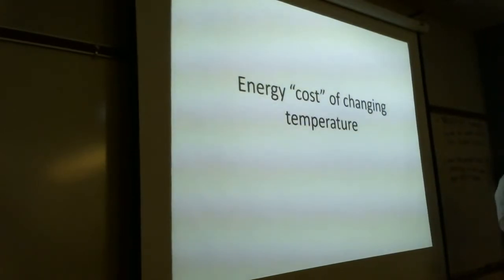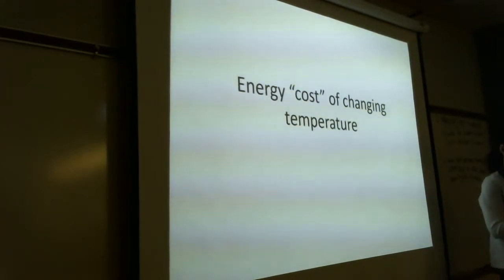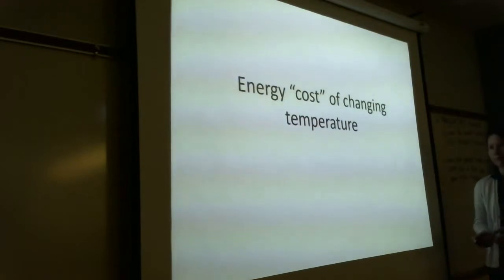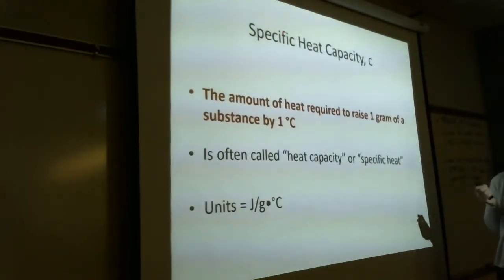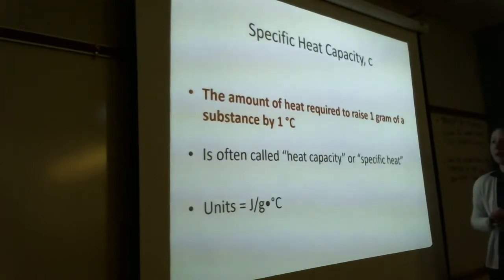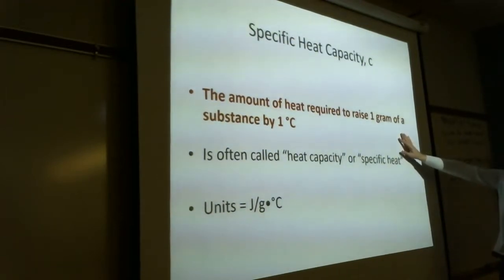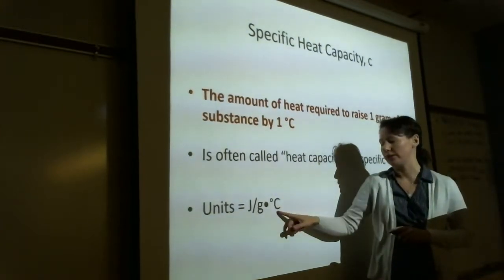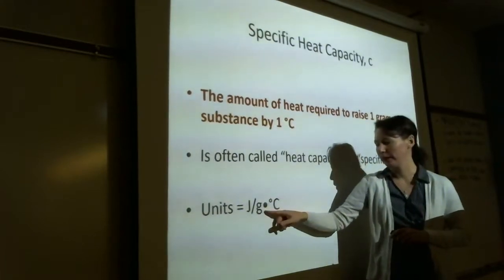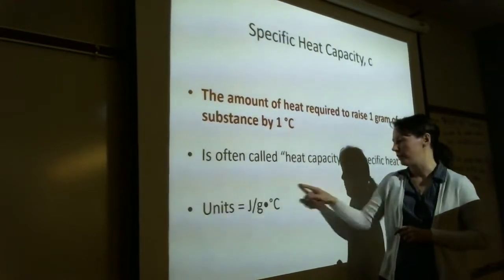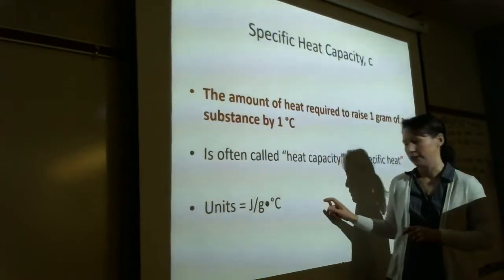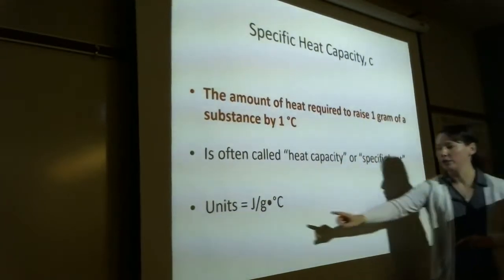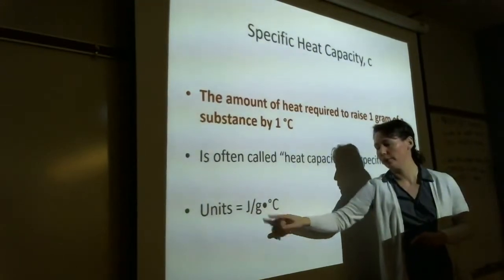Let's look at changing temperature first — we're not changing phase, only changing temperature. We need to talk about heat capacity, which we represent with lowercase c. This is the amount of heat required to raise one gram by one degree Celsius. It has units of joules per gram·degree Celsius. So it'd be joules on top, grams times degrees Celsius on the bottom. This is how much energy in joules it takes to raise one gram by one degree Celsius.